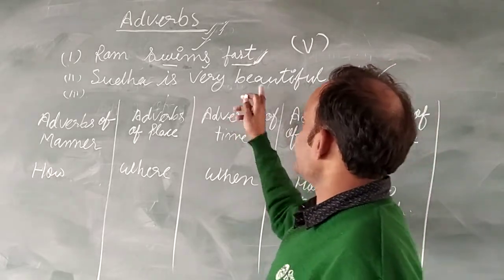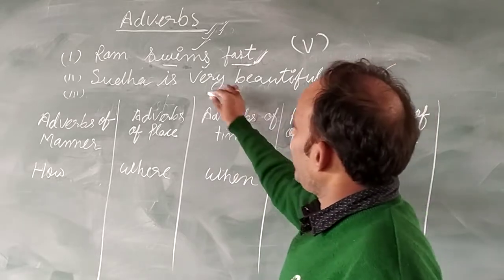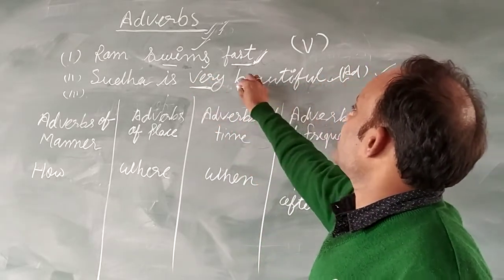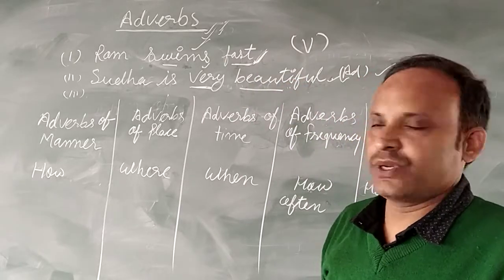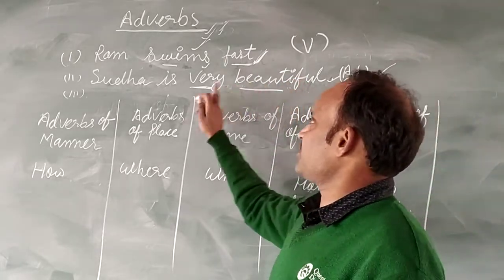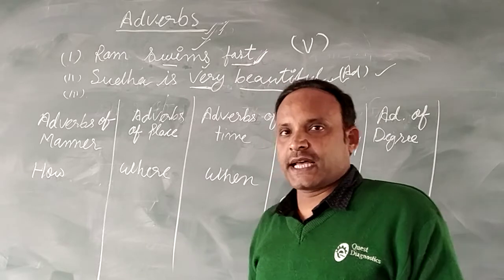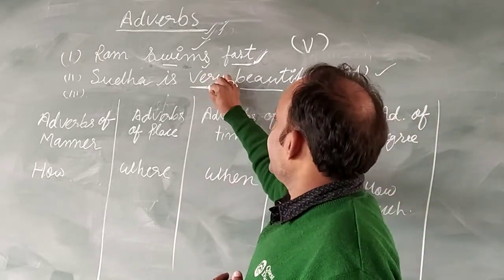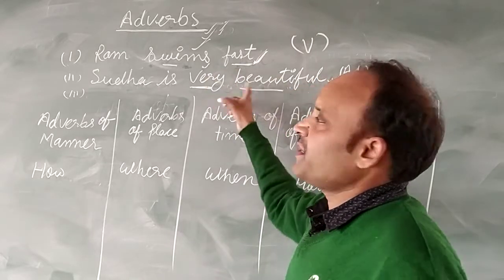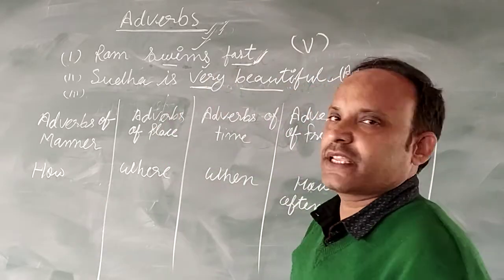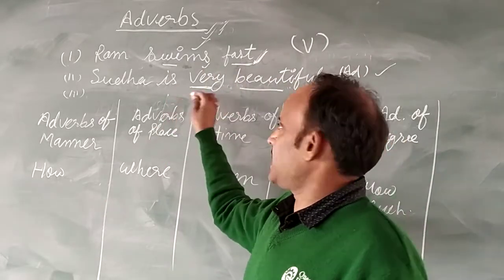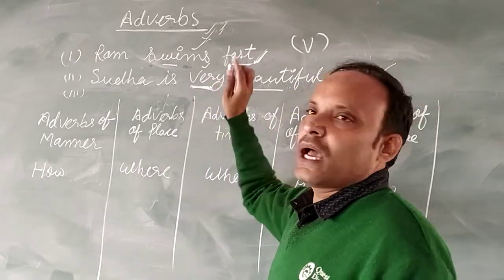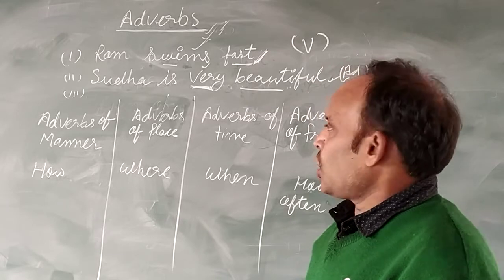In this sentence, the word 'very' tells us about 'beautiful,' which is the adjective. So 'very' describes the adjective 'beautiful.' Therefore, 'very' is the adverb here. So what is an adverb? An adverb.